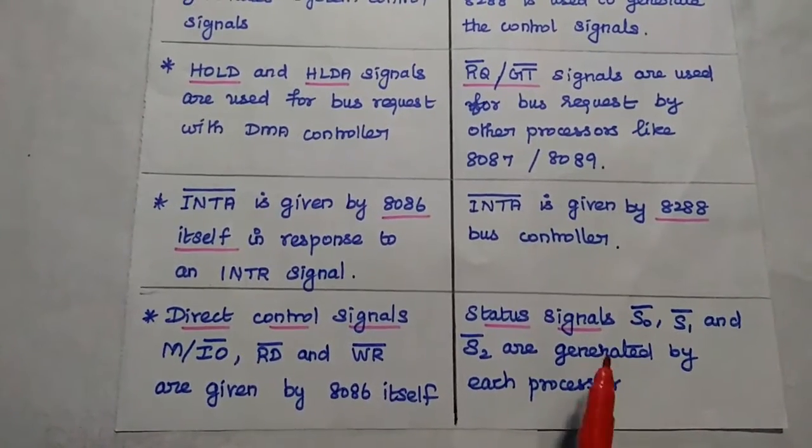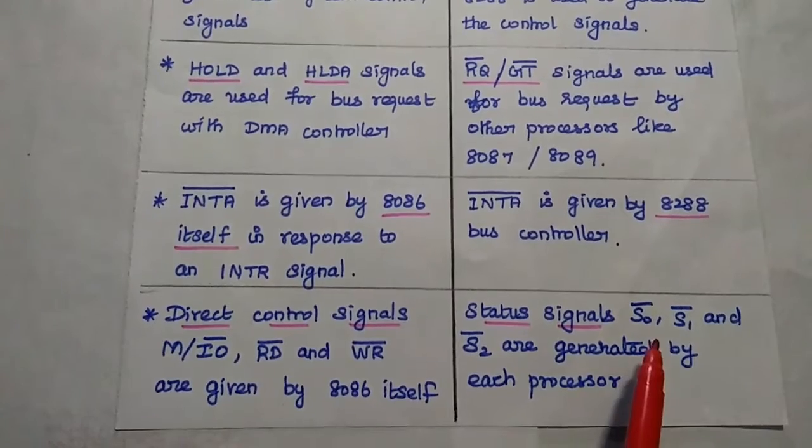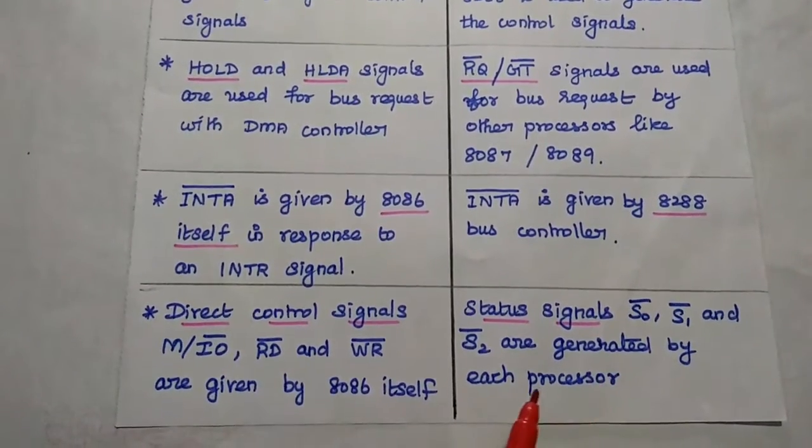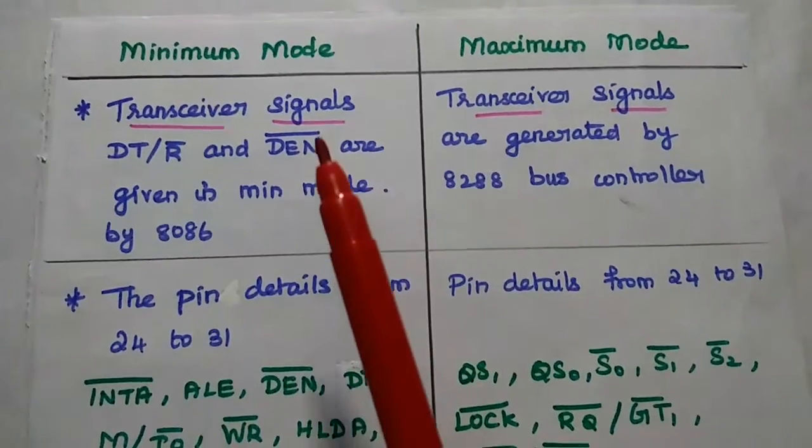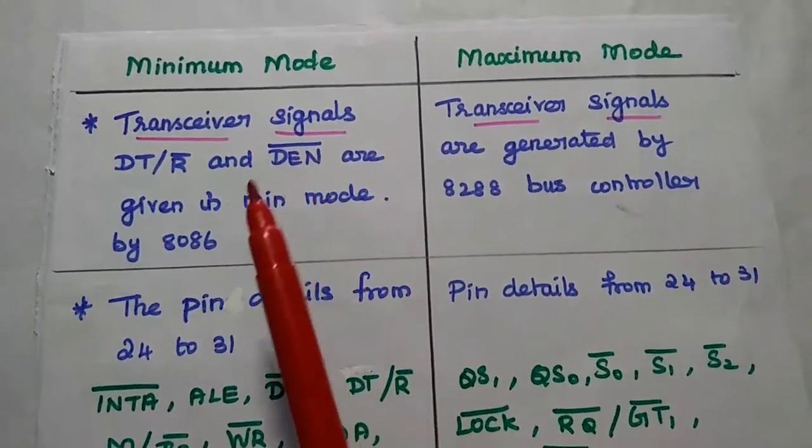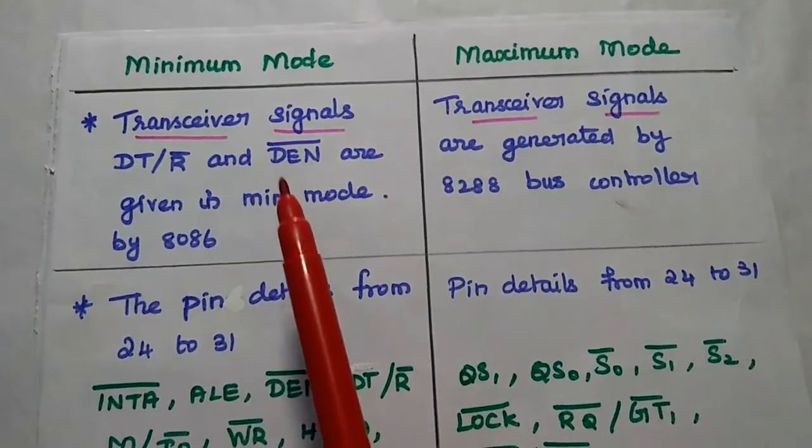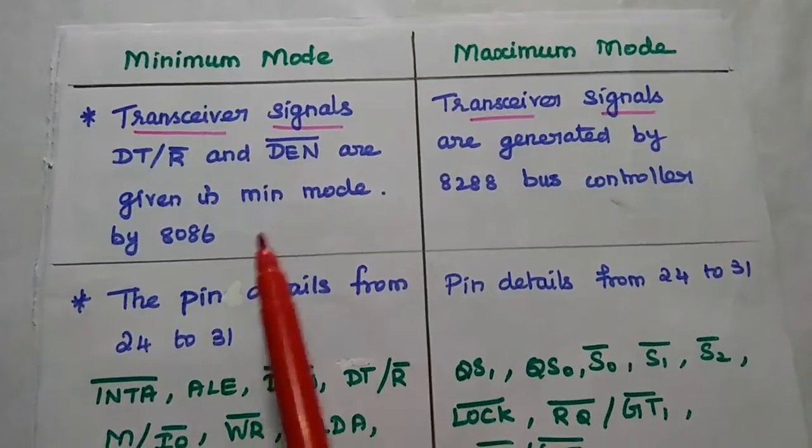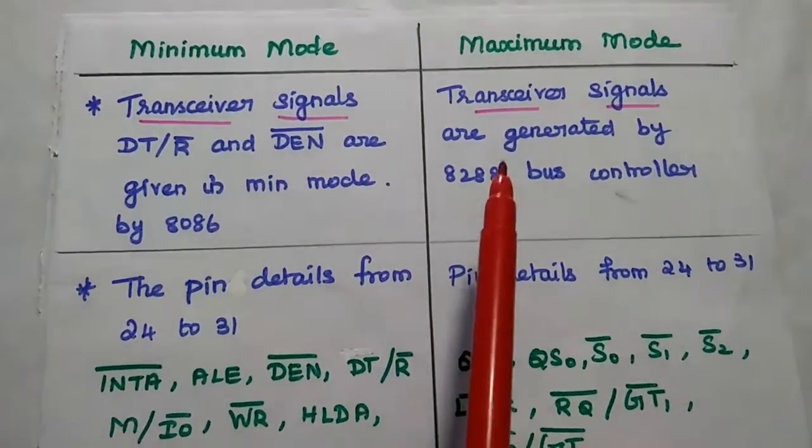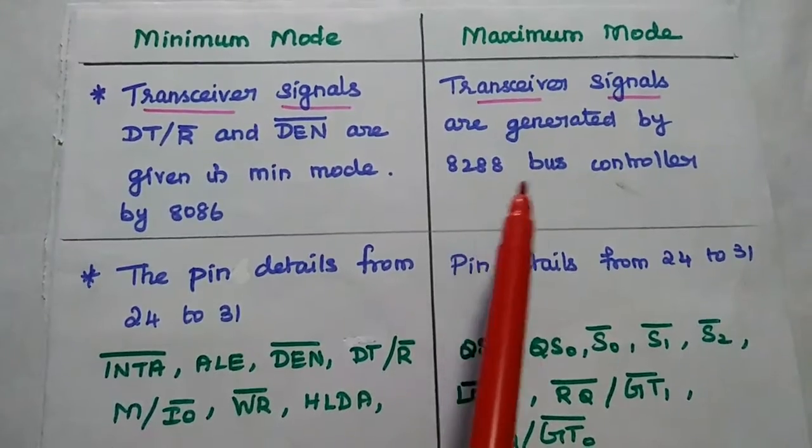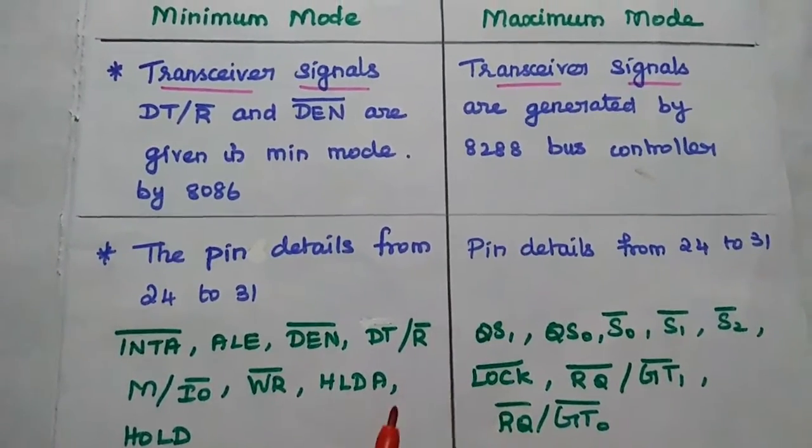But in maximum mode, status signals S0 bar, S1 bar, and S2 bar are generated by each processor. In minimum mode, the transceiver signals are given by 8086 processor itself. But in maximum mode, the transceiver signals are generated by 8288 bus controller.